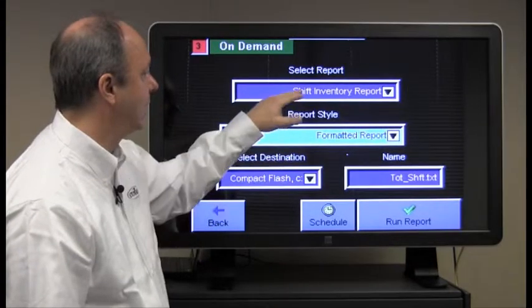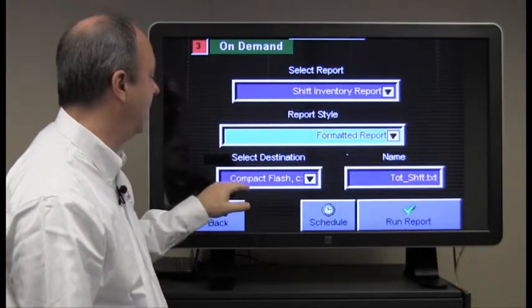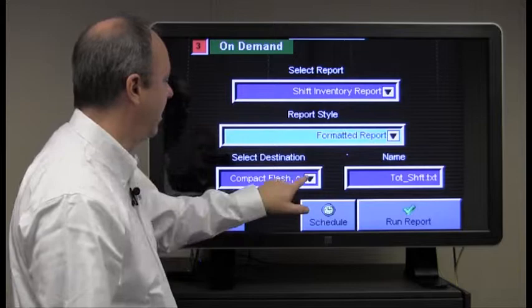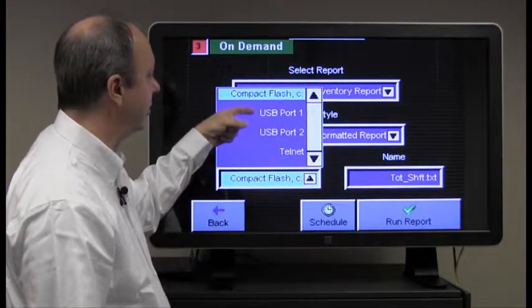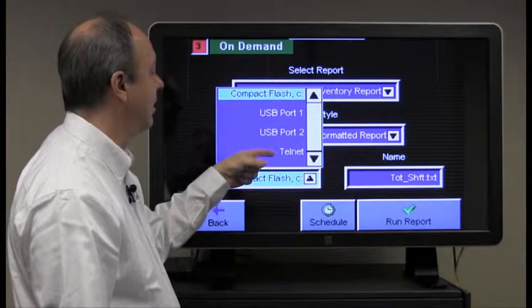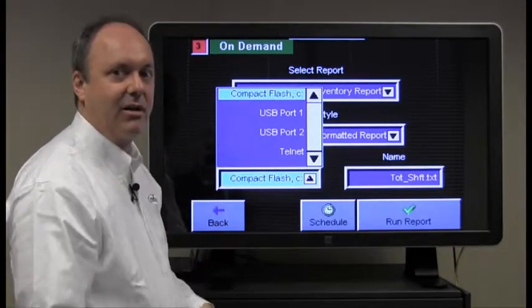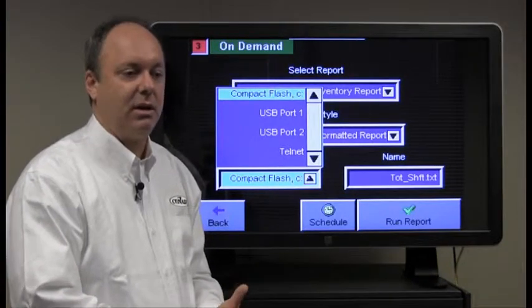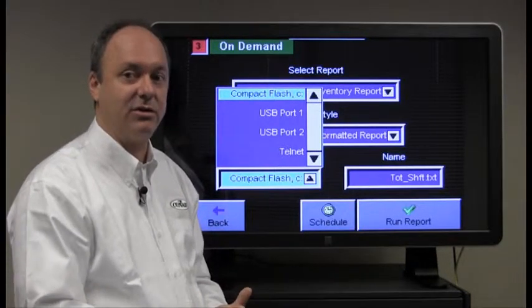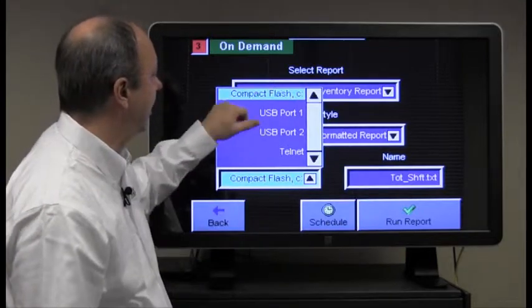The destination is where you'd like the inventory report in a formatted format to go. So in this particular default, it is the compact flash card that's located in the top of the TrueBlend SB2 touch screen. The other choices there are the USB ports, one and two, located on the touch screen beneath the touch screen. As well as an Ethernet connection with a protocol called Telnet. Telnet is an industrial trademark name that is a common protocol used with hyperterminal, other software programs, freeware such as TerraTerm. These are both software packages that allow you to establish a Telnet connection, which is the protocol, back to the touch screen. So we'll select compact flash in this case.